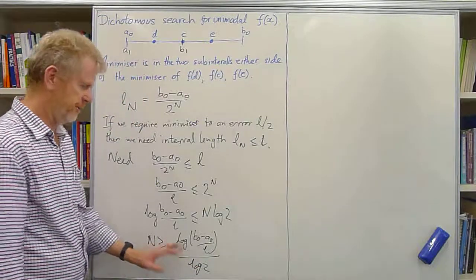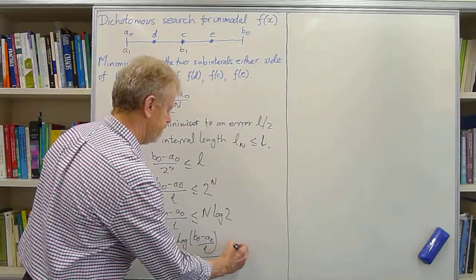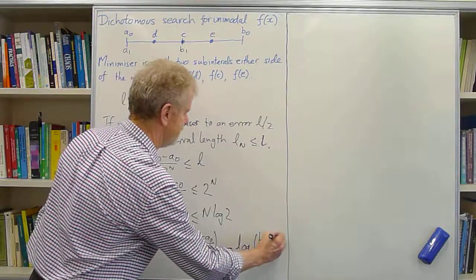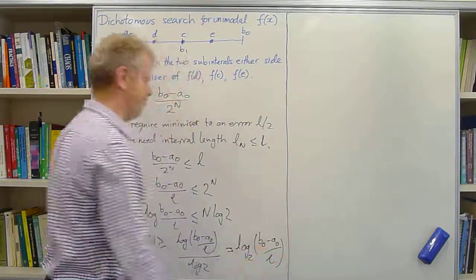So from your knowledge of the logarithm properties, we can write that as log to the base 2 of b0 minus a0 over l, summed up more compactly.